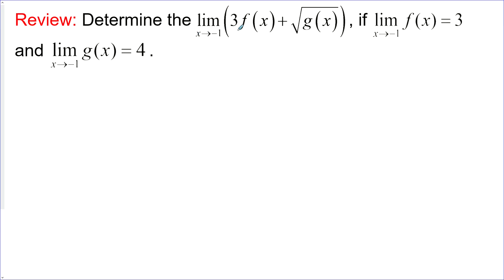By determining the limit of 3f(x) plus the square root of g(x) as x approaches negative 1. Now we're not given what f(x) and g(x) are, but we're given their limits as x approaches negative 1. If this part of the expression is going to get closer and closer to some value, and this part is as well, then we can split this up and do them separately and then add the results.